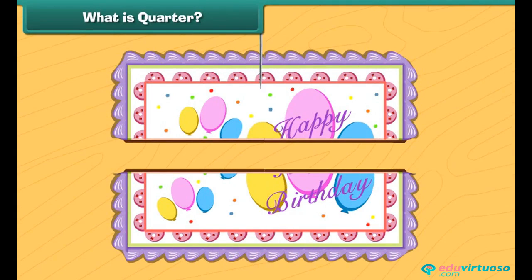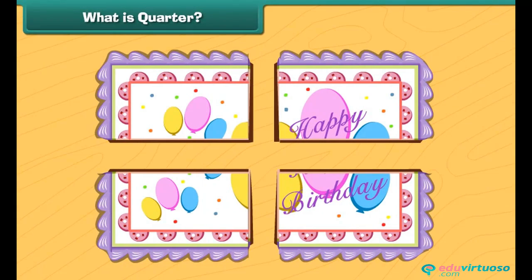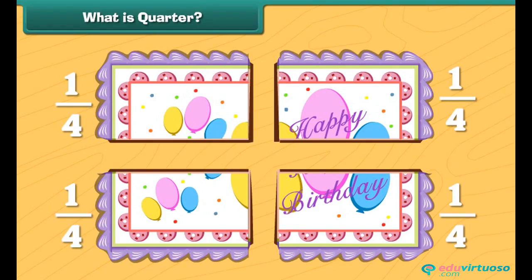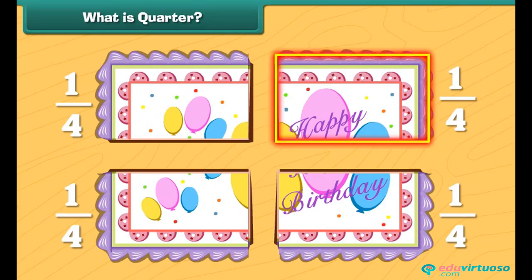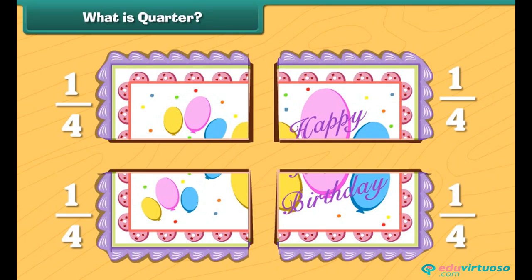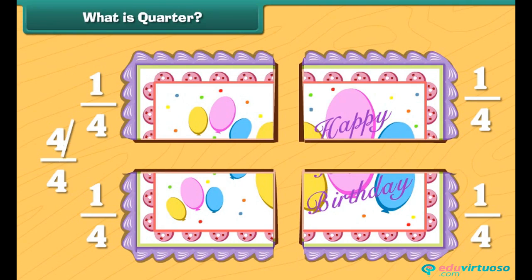Now, let us cut the cake in four equal pieces. Each piece represents one fourth of the whole cake. So, the fraction is one fourth. It is also called a quarter. This is one quarter of the cake, this is two quarters, this is three quarters, and this is four quarters. 4 divided by 4 is 1, so four quarters make one whole cake.